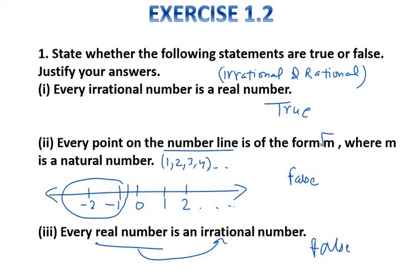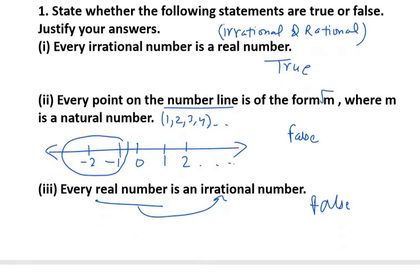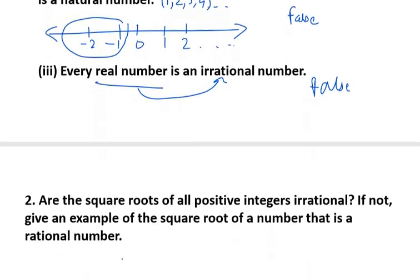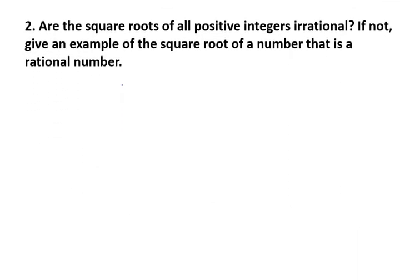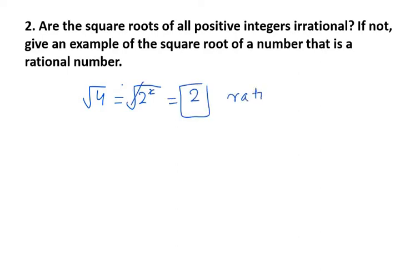Question number 2 asks: are the square roots of all positive integers irrational? If we take 4, the square root of 4 is 2. And 2 is a rational number, so the answer is no.